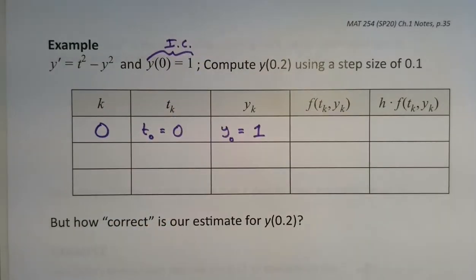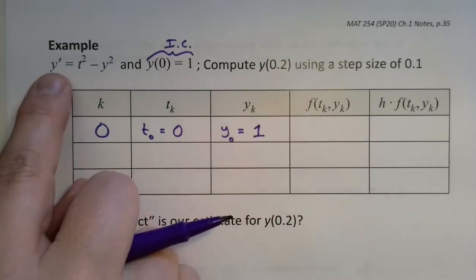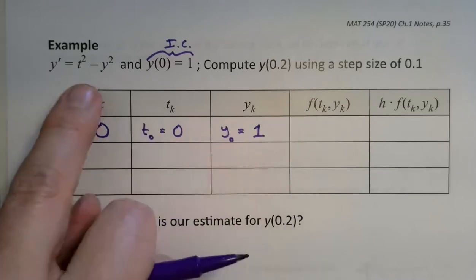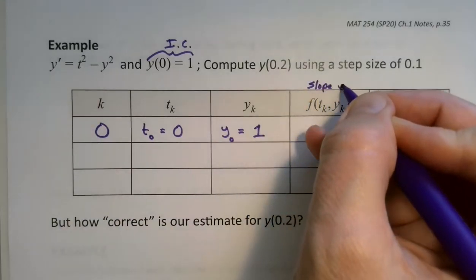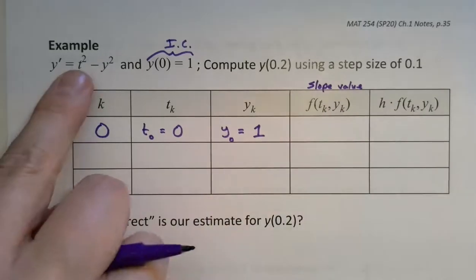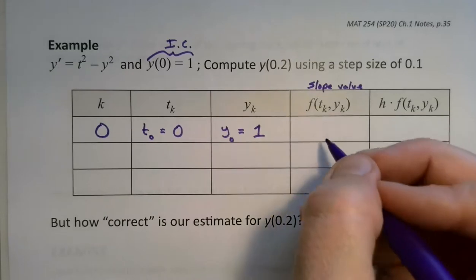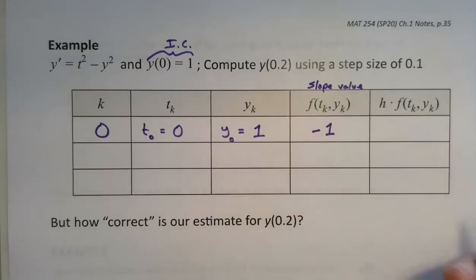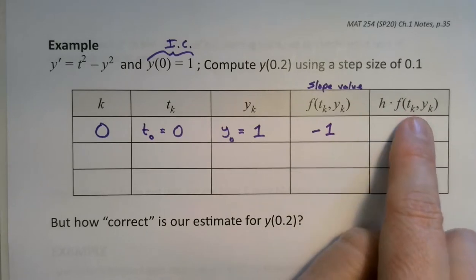The other entries on that row require a little calculation. We need to find the slope — the derivative value at our current location. So plugging in, what it's really asking is the slope value at this particular point. We calculate t squared minus y squared: 0 squared minus 1 squared is just negative 1.